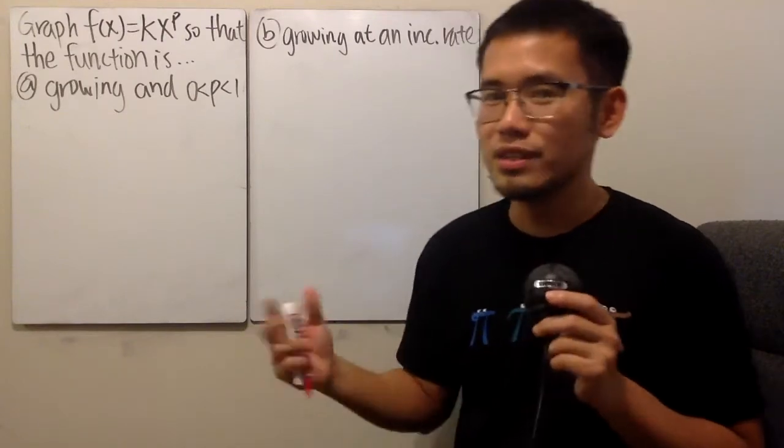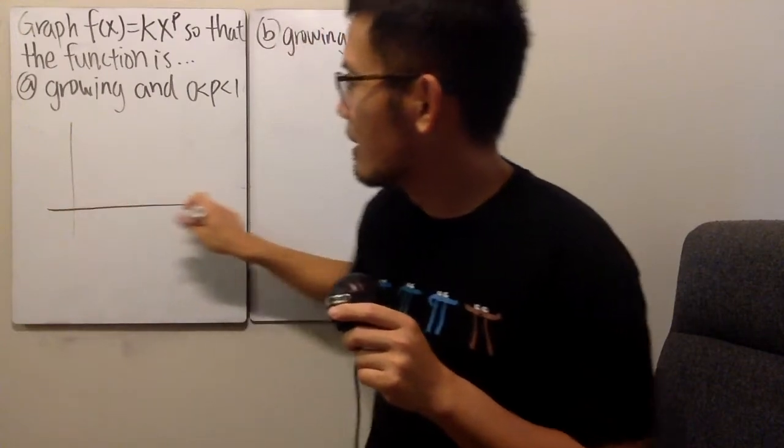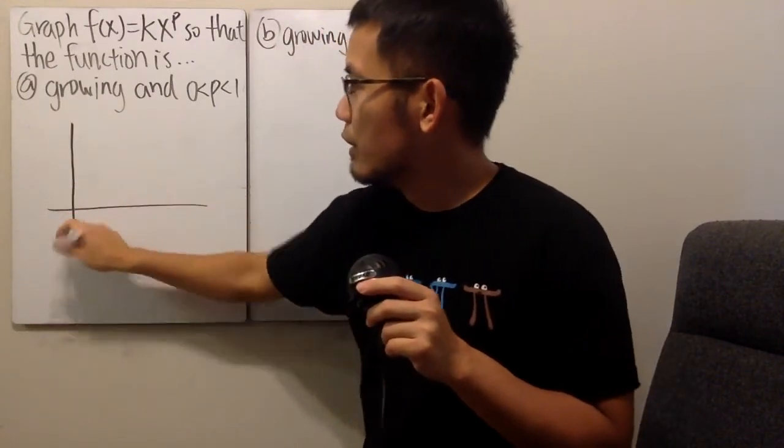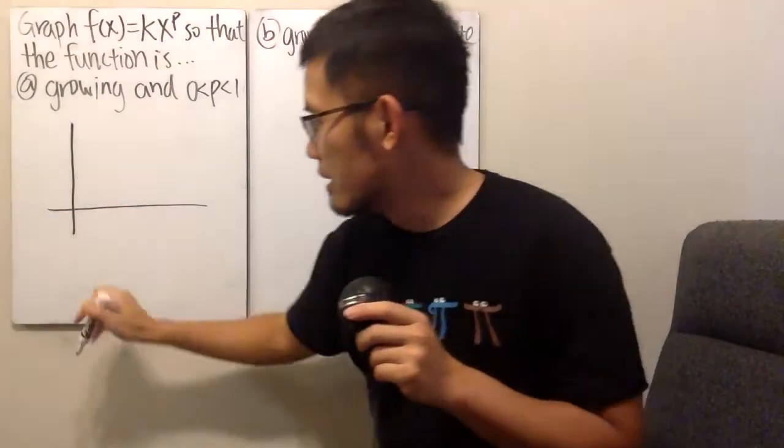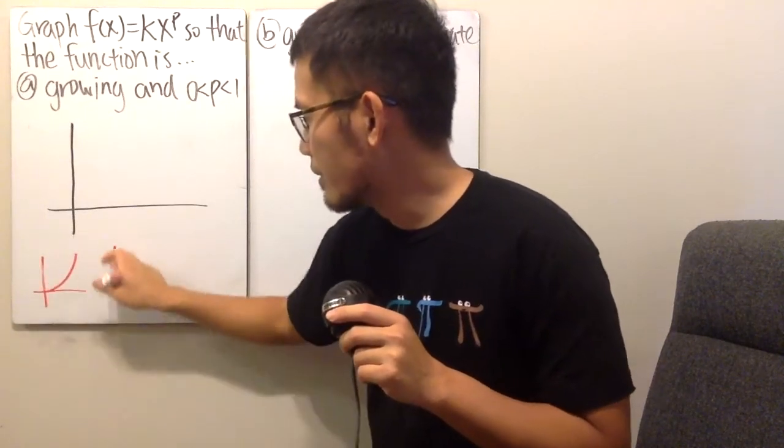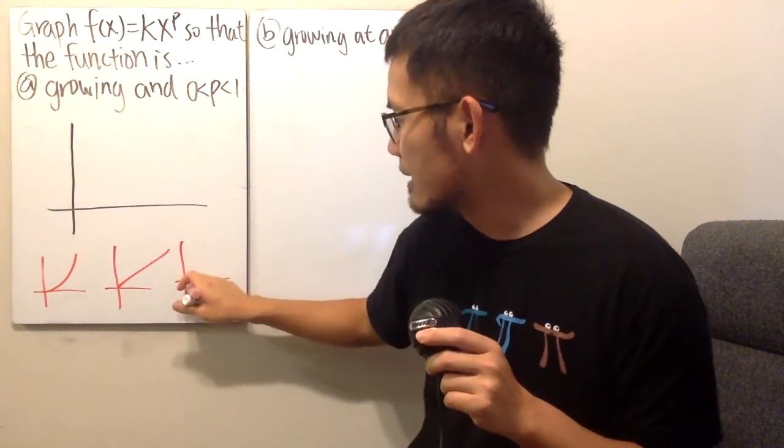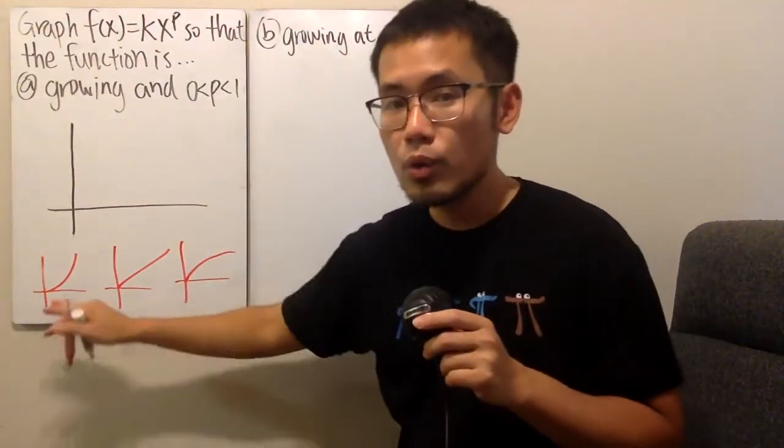This is testing to see if you remember my lectures. Here's the deal: you have three kinds of growing. Let me remind you - either you have a graph like this, or like this, or like this. They are all growing.